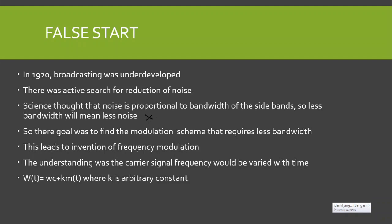The understanding was that in frequency modulation the carrier signal frequency varies with time. This frequency modulation scheme can be mathematically represented as omega of t equals omega c plus k times m of t, where m of t is the message signal. Suppose the maximum amplitude of the message signal is mp. So the instantaneous frequency is going to vary between omega c minus k·mp to omega c plus k·mp, where omega c is the center frequency.